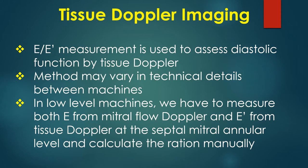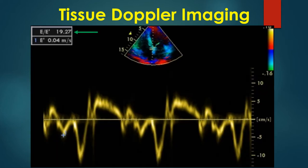Method may vary in technical details between machines. In low-level machines, we have to measure both E from mitral flow Doppler and E prime from tissue Doppler at the septal mitral annulus level and calculate the ratio manually. In other machines, as illustrated in this image, E is measured initially and stored. After that, E prime is measured and the machine automatically calculates the E by E prime ratio, marked by the green arrow at the top left corner in this image.